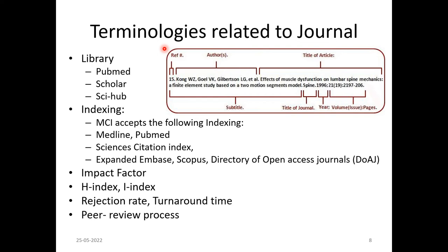Let me take you through the terminologies related to a journal article. First, we need to know what is meant by a library. PubMed is a library for getting journal articles, Google Scholar is one such library, and Sci-Hub is a library which accesses all paid journals to provide journal articles. Indexing means these are agencies which help in keeping journals under their board.